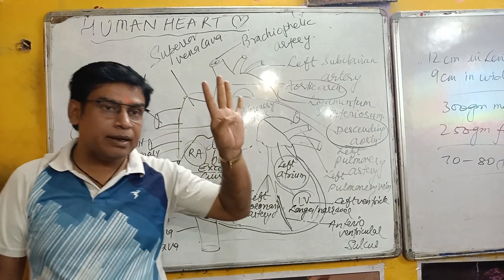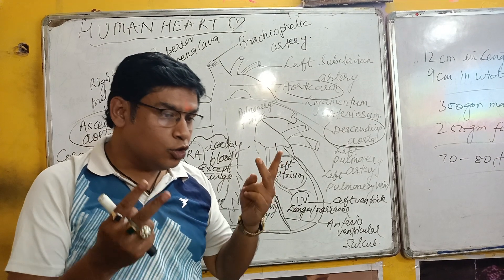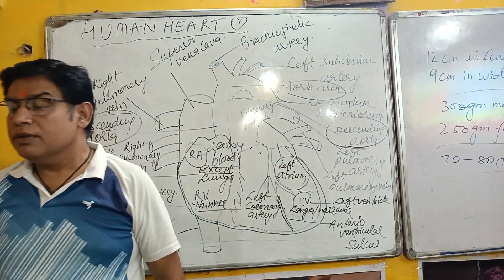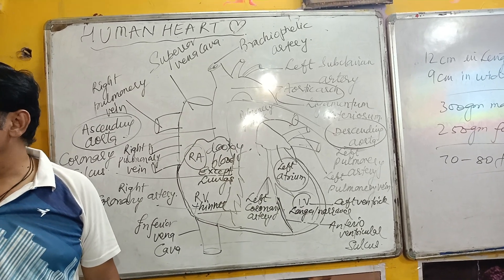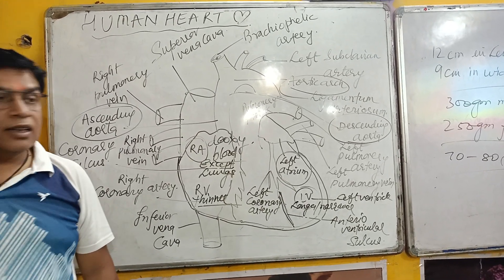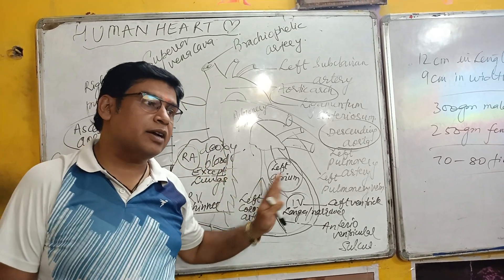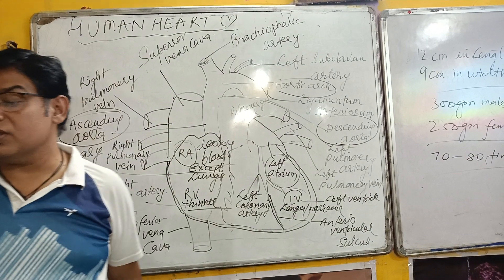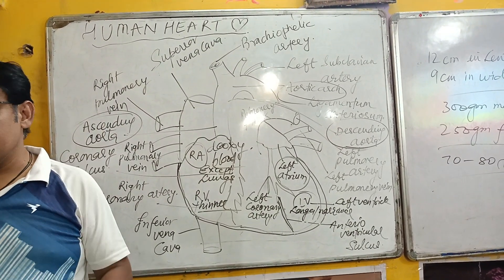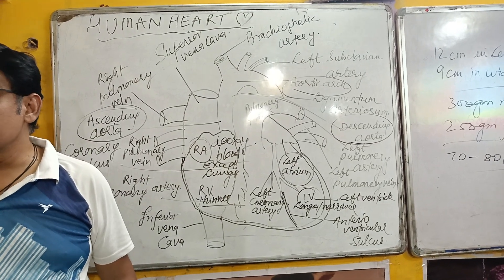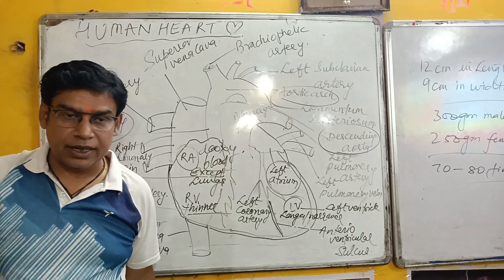Internally, the human heart is four-chambered: two auricles and two ventricles. The oxygenated and deoxygenated blood are separated on each side. In the next class, we will talk about the internal structures and walls of the heart.